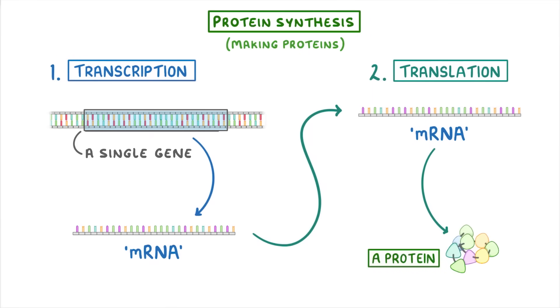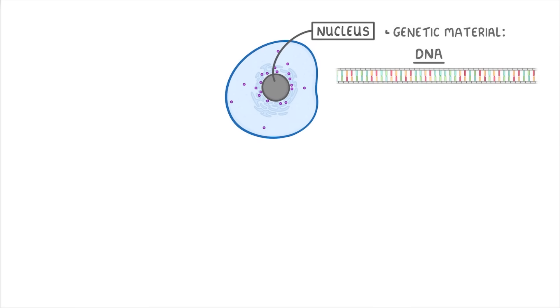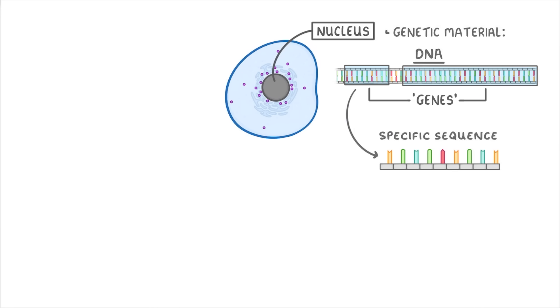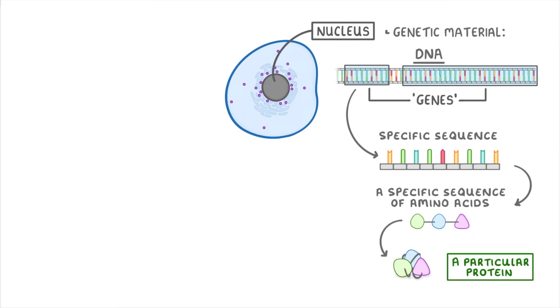Before we go through the details, we need to look at why we actually need these two steps. Inside almost every cell is a nucleus that contains all the genetic material of that cell in the form of DNA. The reason we say DNA is so essential to life and controls what the cells do is because it contains thousands of genes, which are each small sections of the DNA that have a specific sequence of bases, and so are able to code for a specific sequence of amino acids, which when combined will form a particular protein.